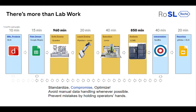Secondly, we avoid manual data handling wherever possible. It really comes down to: in the lab you have no manual data handling anymore. All the robots already have the files they need for the reaction — the operator doesn't need to put in any numbers, because that's where typos happen. In general, we want to prevent mistakes by holding the operator's hand, and how we mean that is through the Google Sheet: it guides us through the lab so we cannot easily make mistakes.